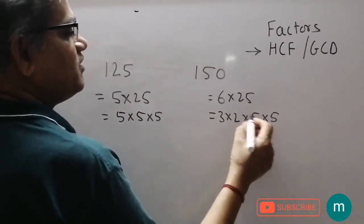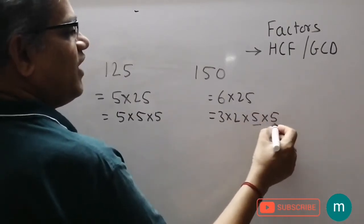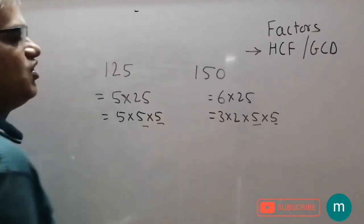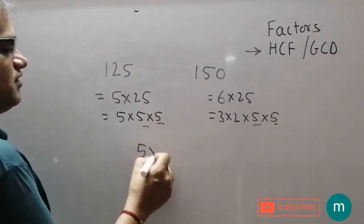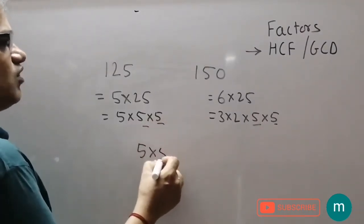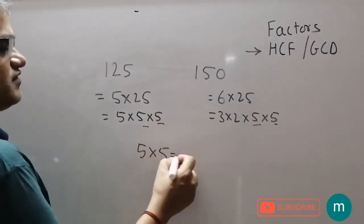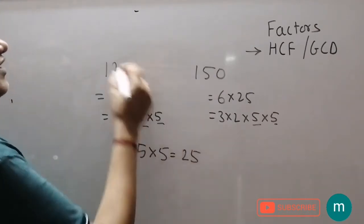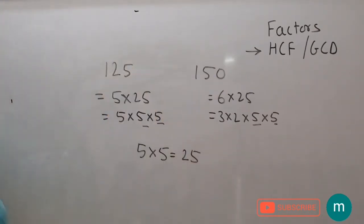There is a common element — 5, 5 is common. So the highest common factor is 25. So 25 is the highest common factor.